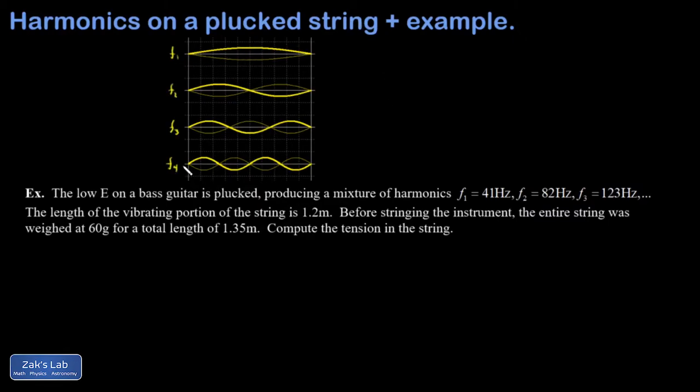And we called those resonant frequencies f1, f2, f3, and f4, and so on. So these are the special frequencies for which the waves on the string interfered constructively with their own reflections. That happens when you fit a wave onto the string so that both ends of that wave have a displacement of 0, which matches the boundary conditions of the string.